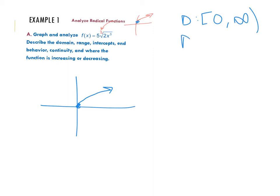The range starts here right at 0, and it looks like this line goes up forever, so my range would also be 0 to infinity. Intercepts, so x intercept and y intercept. They look like they're both right here at 0, so I'm going to say 0, 0 and 0, 0.